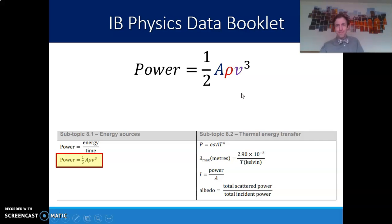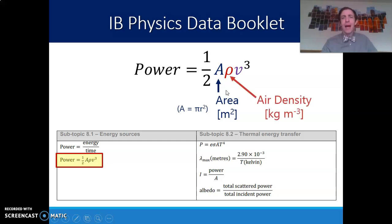Let's look at this data booklet equation, because you will always have access to this anytime I give you a problem that needs it. So variables that you need to know: area is A, that's in meters squared. That will always be a circle, so πr². ρ is the air density that's going to be given to you in kilograms per cubic meter. And then v is the velocity, and that's in meters per second.